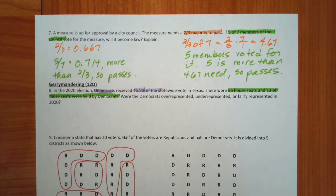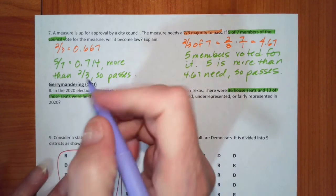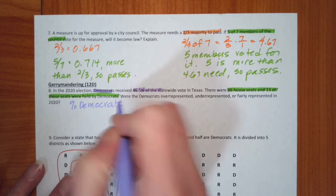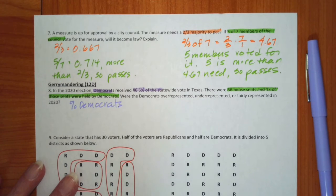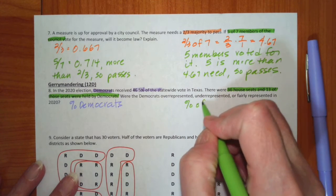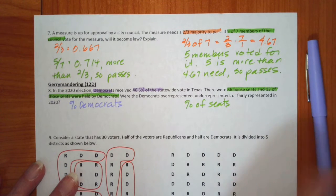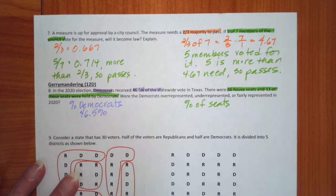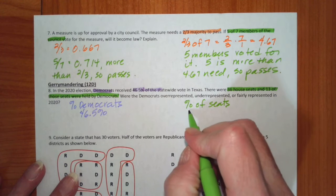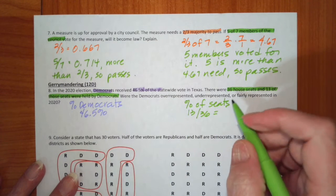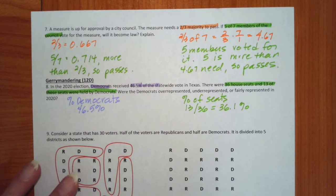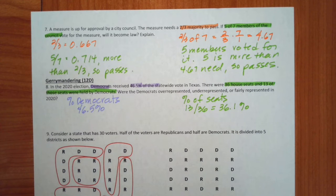So we are going to compare the percent of Democrats, and we are going to compare that to the percent of seats. The percent of Democrats is 46.5%. To find the percent of seats, we have 13 out of 36, which becomes 36.1%.